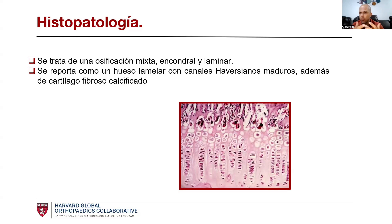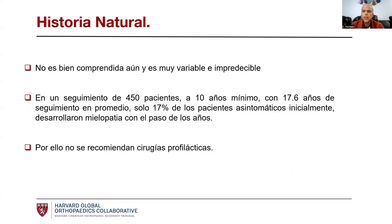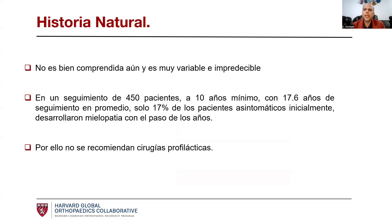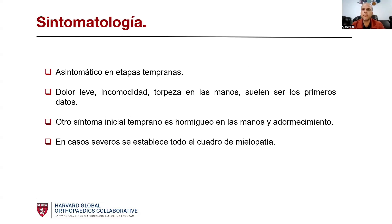En autopsias que se han hecho, hay necrosis que afecta tanto a la sustancia blanca como a la sustancia gris, y esto va en relación con lo que pueda presentar el paciente. La historia natural no es bien comprendida aún, es variable e impredecible. Hay seguimientos ya largos de algunos casos, y lo interesante es que solo el 17% de los pacientes asintomáticos en su inicio van a desarrollar mielopatía, lo que respalda que no es recomendable hacer una cirugía profiláctica.